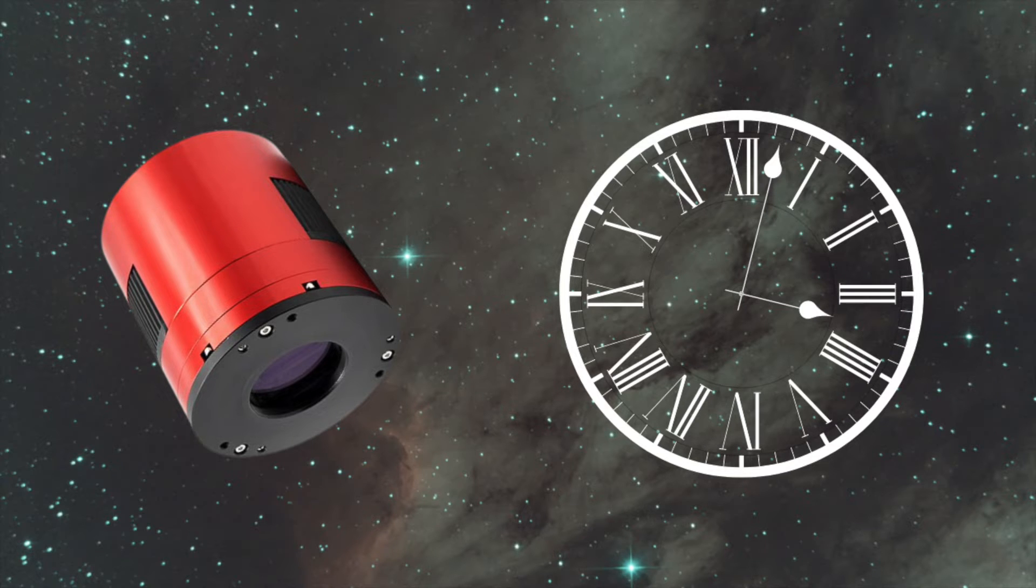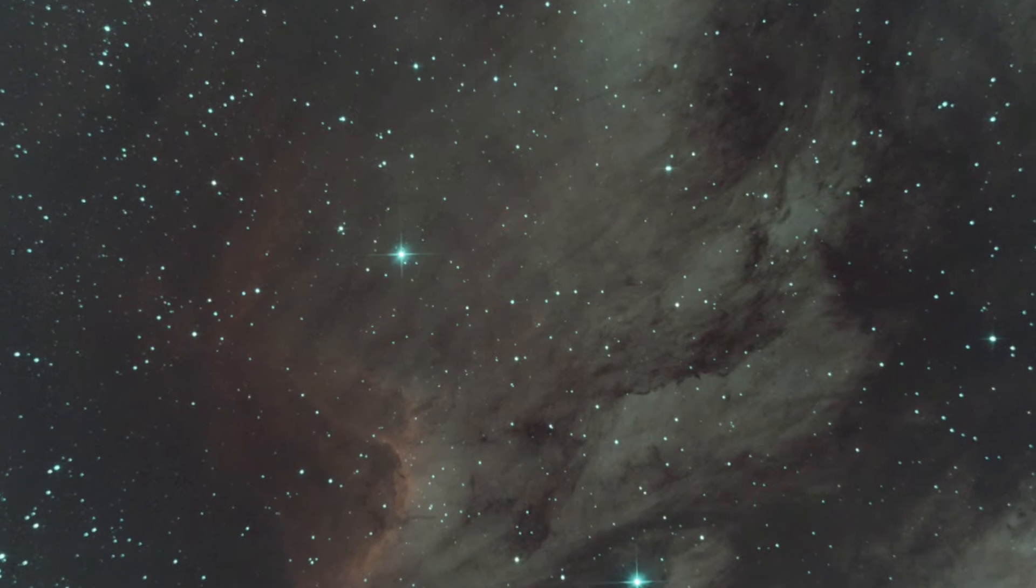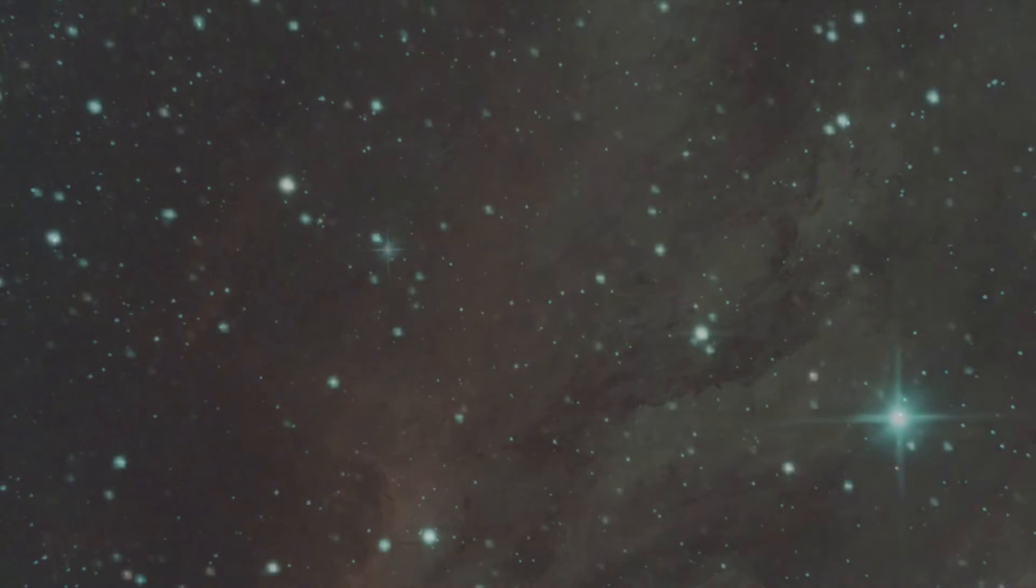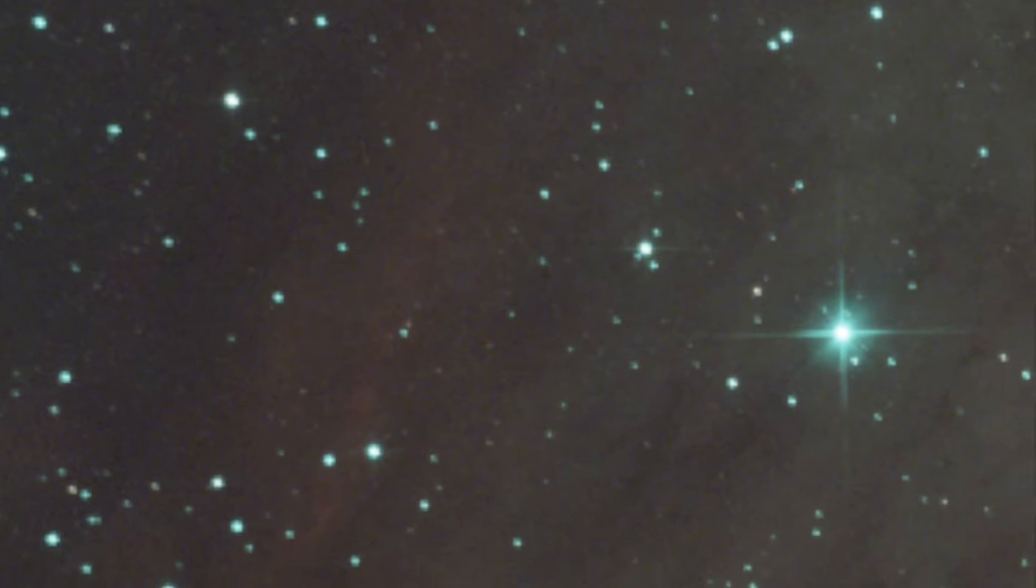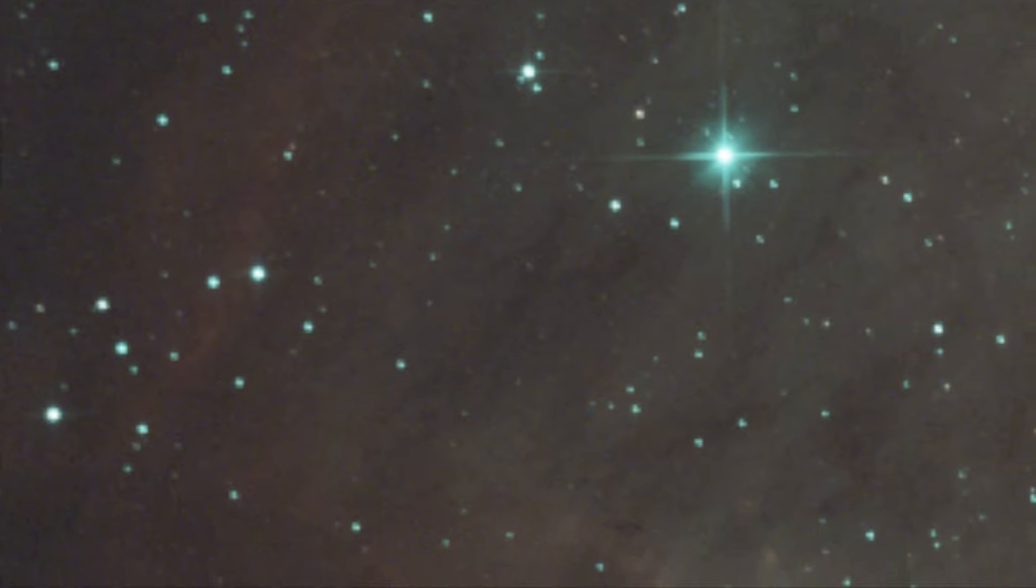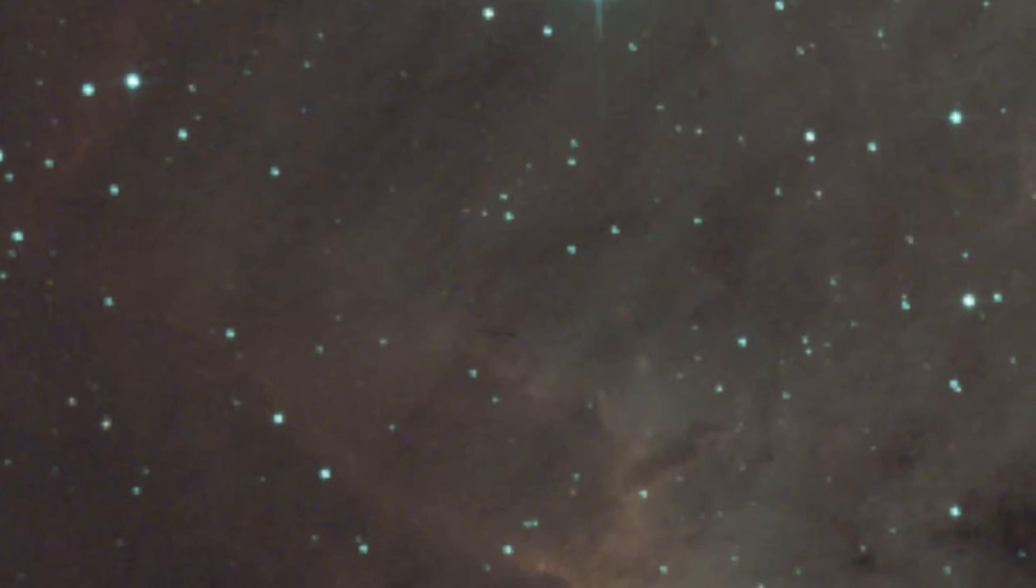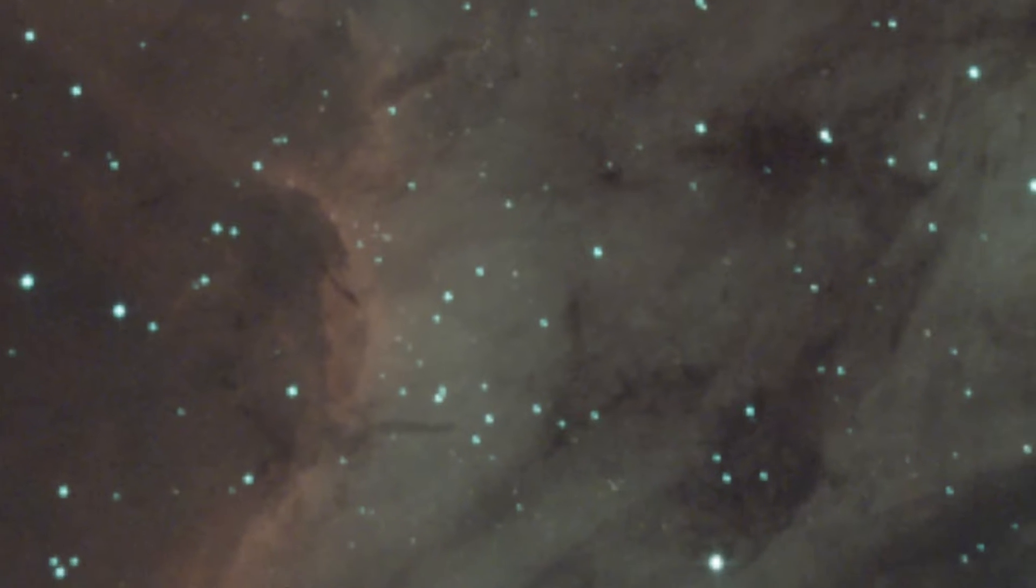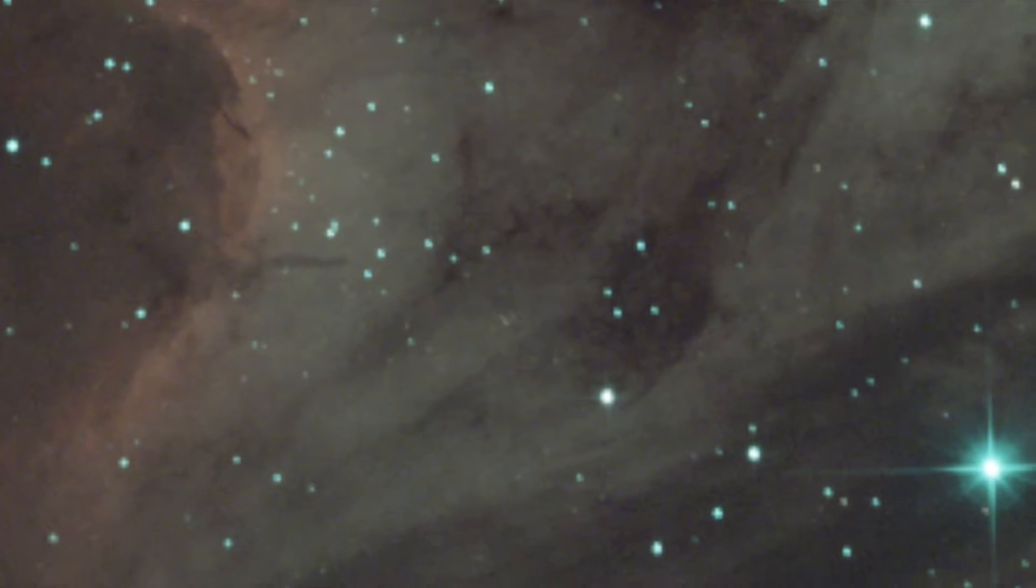However, they can be less sensitive to light as compared to mono cameras, and the Bayer matrix filter can introduce artifacts, added noise, and can reduce the overall resolution and quality of the image. One-shot color cameras also don't offer the same level of control over your imaging as monochrome cameras do.